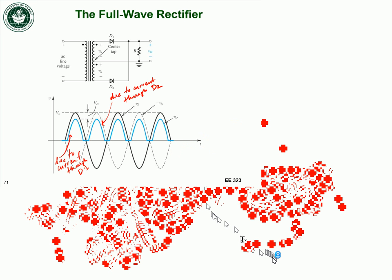Putting it all together: when the AC voltage was positive, I had a positive output voltage due to current through diode D1. When the AC voltage is negative, I'm only conducting current through diode D2, but my output voltage is again positive. Looking at the output — the blue curve — versus the input from the source — the black curve — the output is always positive and just repeats.